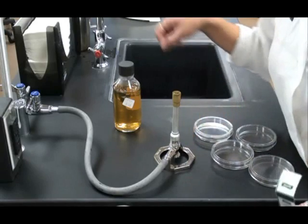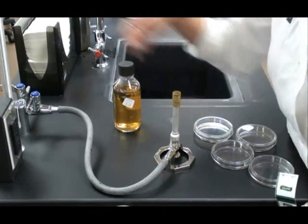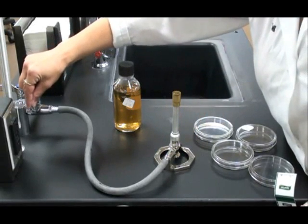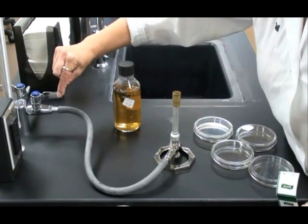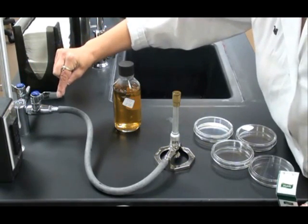To light my Bunsen burner, I make sure it's hooked up to the gas supply and then I turn the handle of the gas supply so that it's parallel with the nozzle. That means the gas is on.